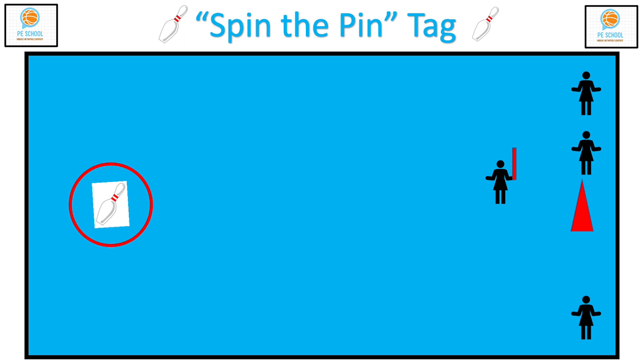If the bowling pin does not point at any of the students when it stops, you can simply have students repeat the spin for that round.